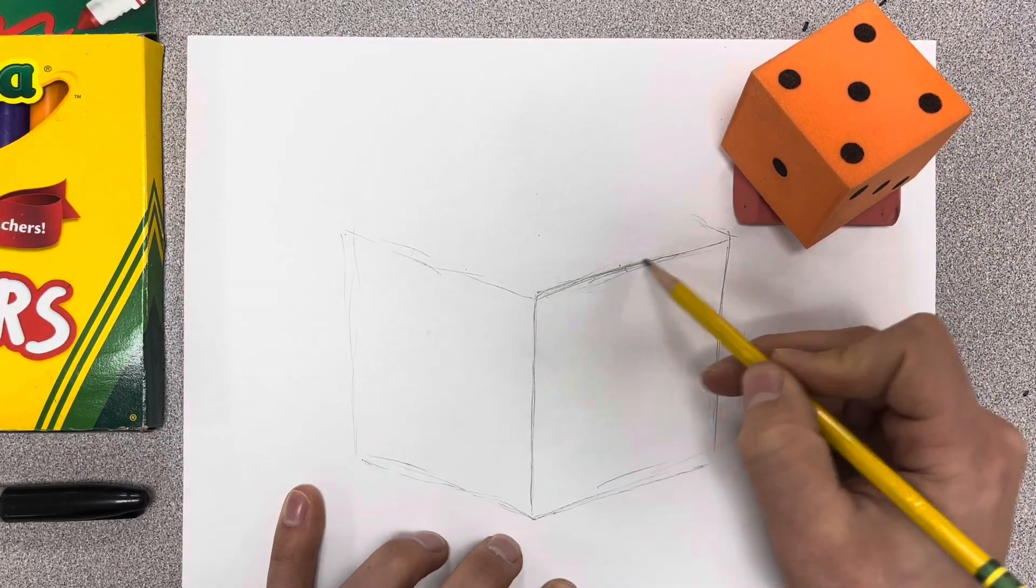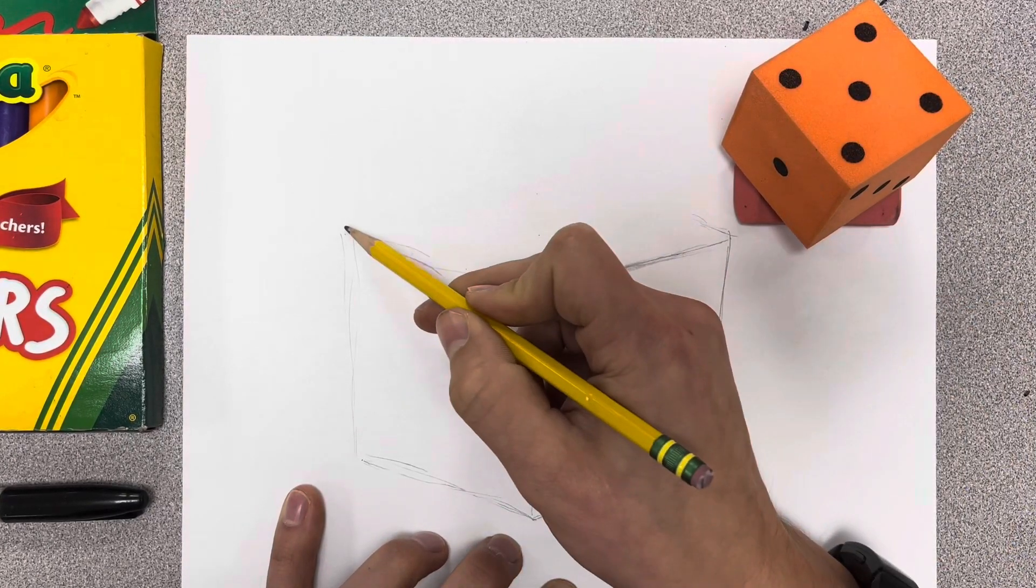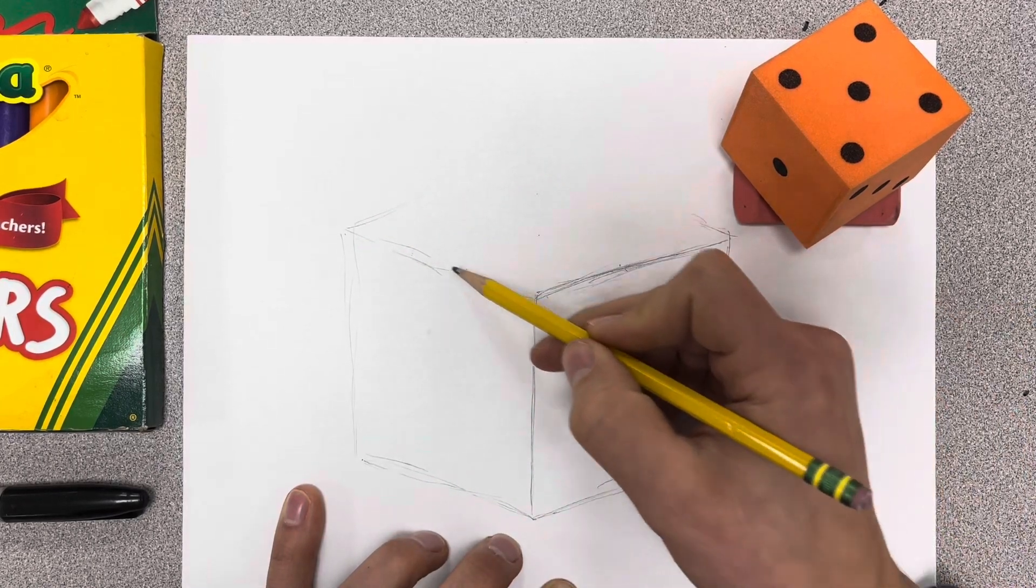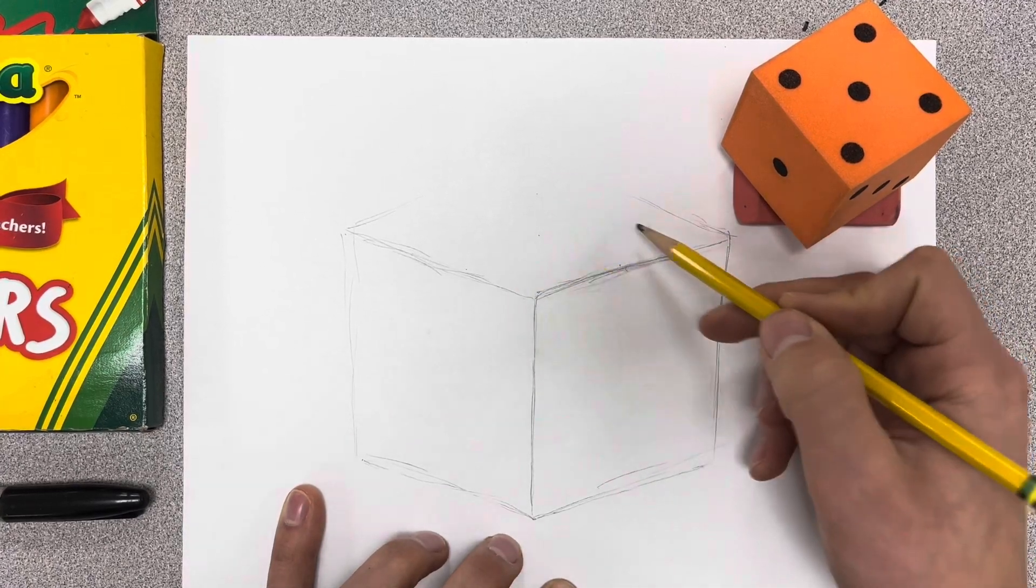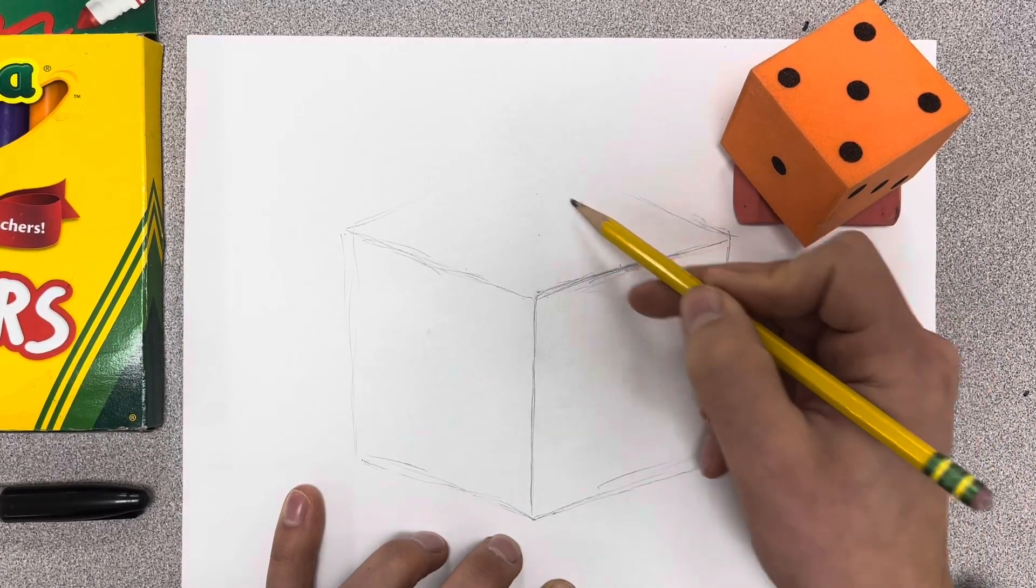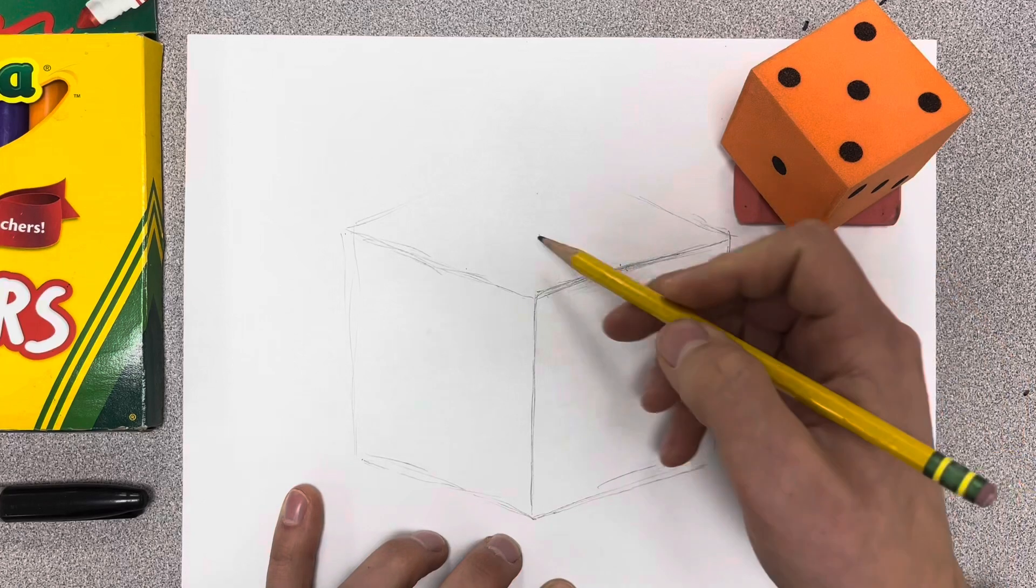The same kind of way as this side goes, this side has to go. The same way as this side goes over here, this way has to go. I think once you kind of get that or understand that concept, then it starts to look a little bit more 3D.